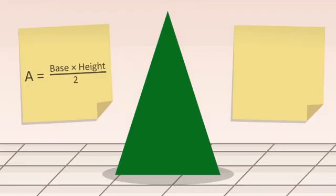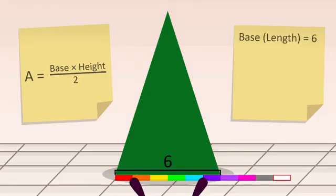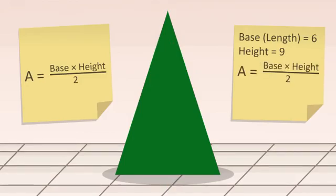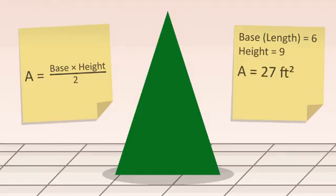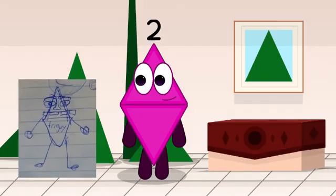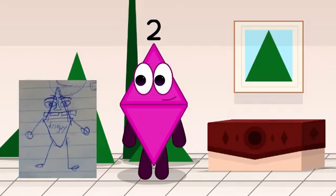Here's another tree. This tree is 6 feet long and 9 feet tall. Using our formula, this tree's area is 27 square feet — exactly what we want. Okay, let's get out of here.